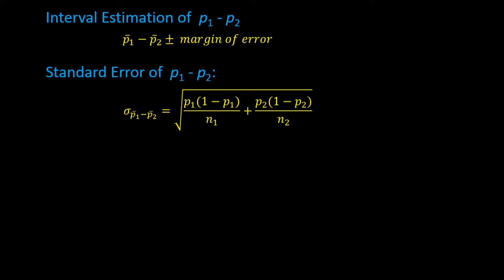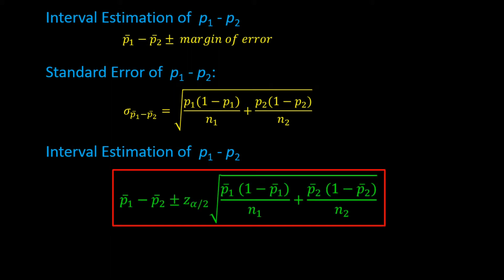You may remember the standard error for the difference between two means was sigma subscript x̄₁ minus x̄₂. Now we have p̄₁ minus p̄₂ instead of x̄₁ minus x̄₂, since we are dealing with the difference between two proportions and not two means. To calculate the interval estimate for p₁ minus p₂, we take the point estimate plus and minus the margin of error. We always use z for proportions, so we have a z value times the standard error.